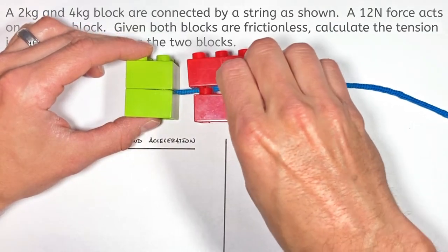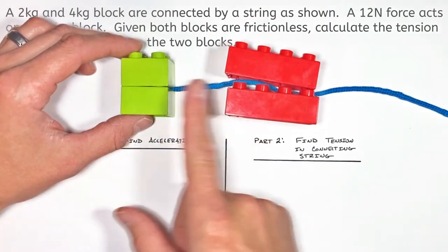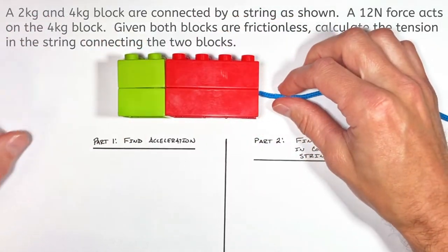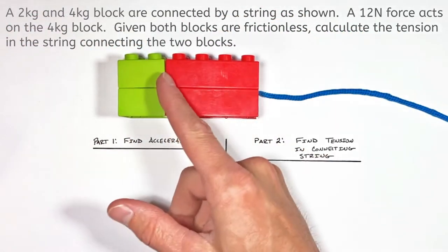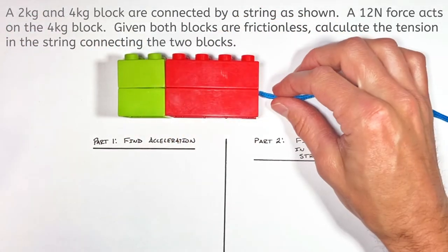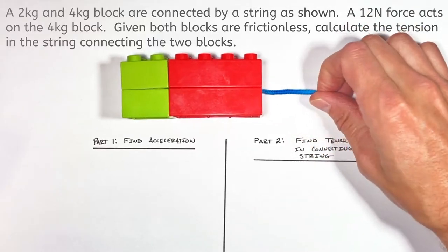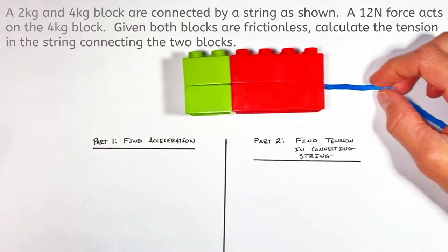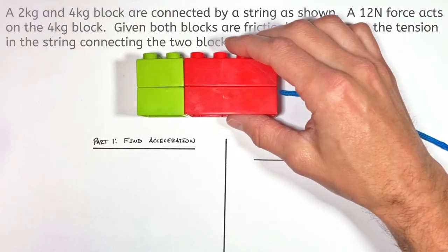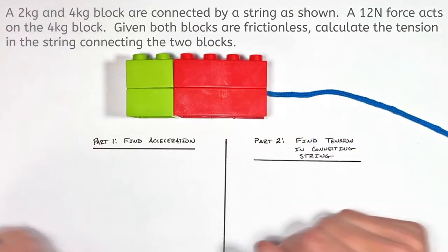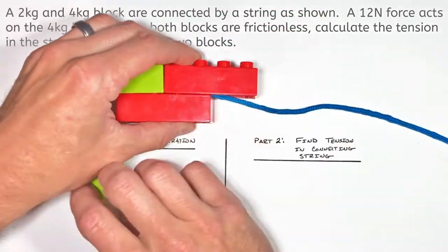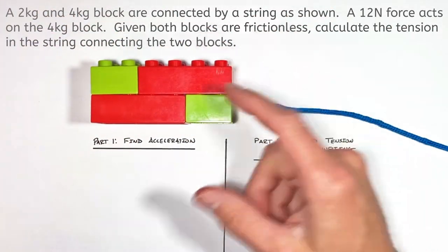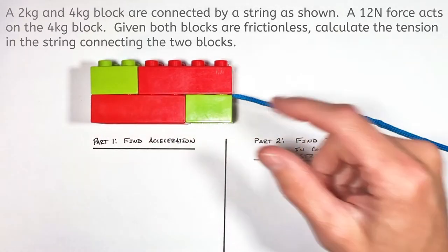So if the length of the string separating the two blocks doesn't matter, what if there was no space between these two blocks or there was no string at all? That wouldn't affect the acceleration of the system — we haven't changed the total force acting on the system. And if that seems confusing, let's go a step further. Imagine these two blocks were actually just one large block.